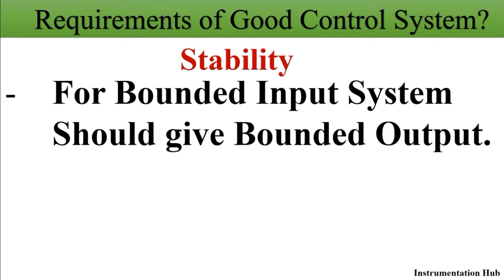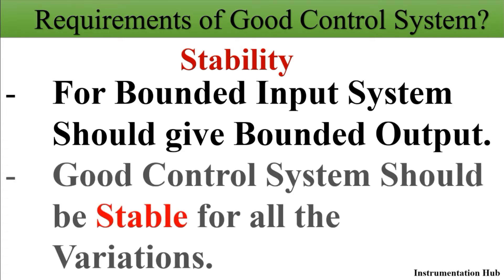The next parameter is stability. For a bounded input, the system should give a bounded output. The output should not vary very high and should not have high oscillations. A good control system should be stable for all variations in input.